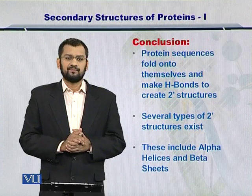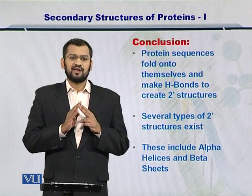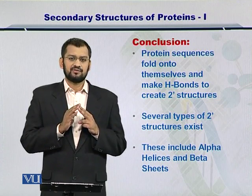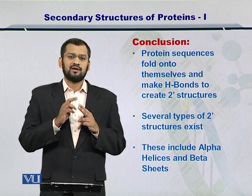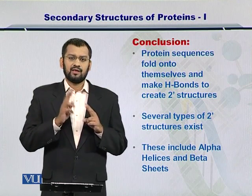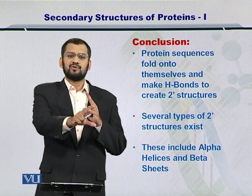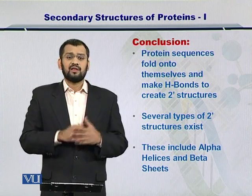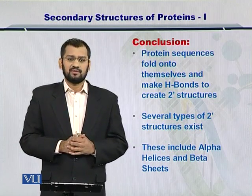In conclusion, we now know two forms of secondary structures that make protein tertiary structures: the alpha helices and beta sheets. They arise from the primary structure and give rise to tertiary structures. There are several other types of these structures as well that we will study in later modules.